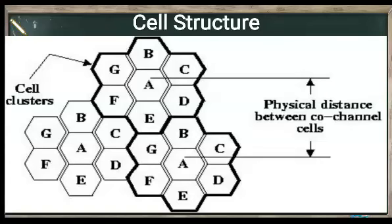Generally, this structure looks like a cellular structure, similar to a cellular structure in biological terms. Such structures are called cell structures. Each cell shape is hexagonal. When scientists decided on the shape, they found hexagonal shapes are particularly suited for this structure because each cell connects with the others. Therefore, hexagonal shapes were chosen for the cell structure in cellular communication systems.